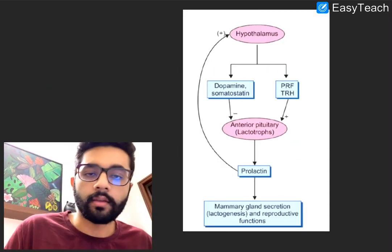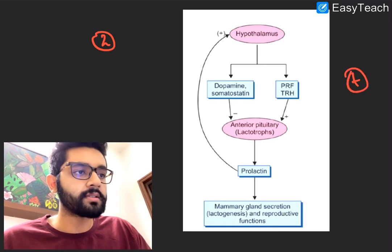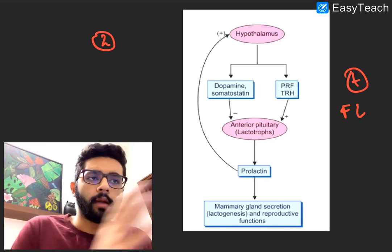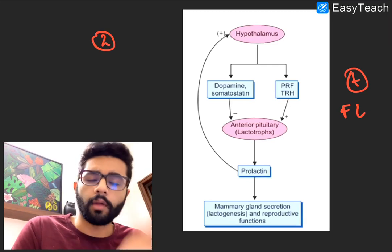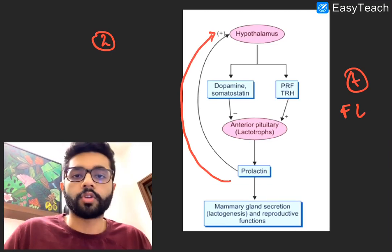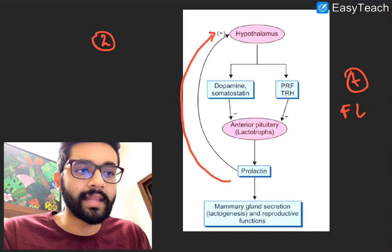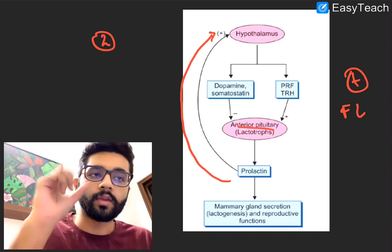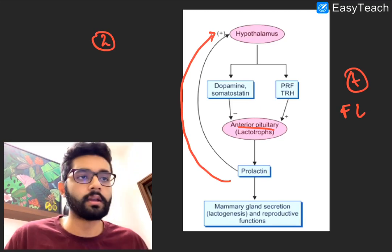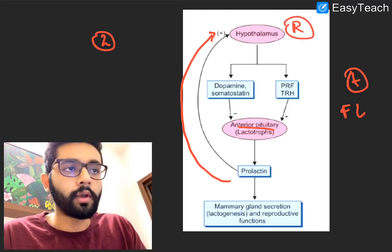Now we need to understand prolactin hormone regulation. Prolactin is one of those rare substances with a positive feedback loop — prolactin itself can stimulate more production of prolactin. Prolactin is secreted by the lactotrophs in the anterior pituitary gland, which is always under the control of the hypothalamus. The hypothalamus has both a negative and a positive system: it inhibits prolactin secretion by producing dopamine, and when the hypothalamus produces prolactin releasing factor (PRF), it increases prolactin production.